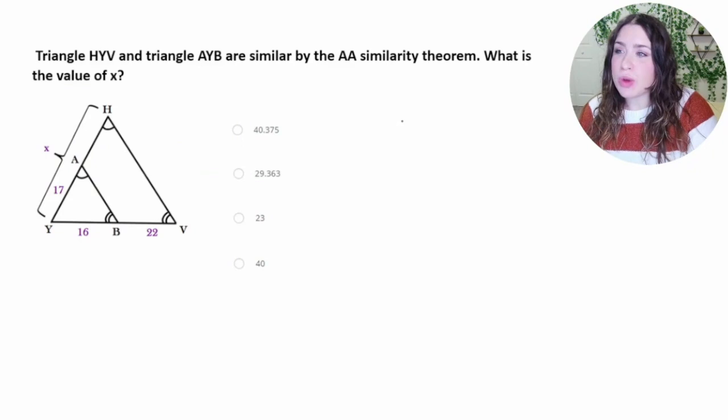This problem says triangle HYV and triangle AYB are similar by the angle-angle similarity theorem. What is the value of X? So you may remember that when figures are similar, their sides are going to be proportional. So we can set up a proportion to help us find the value of X.